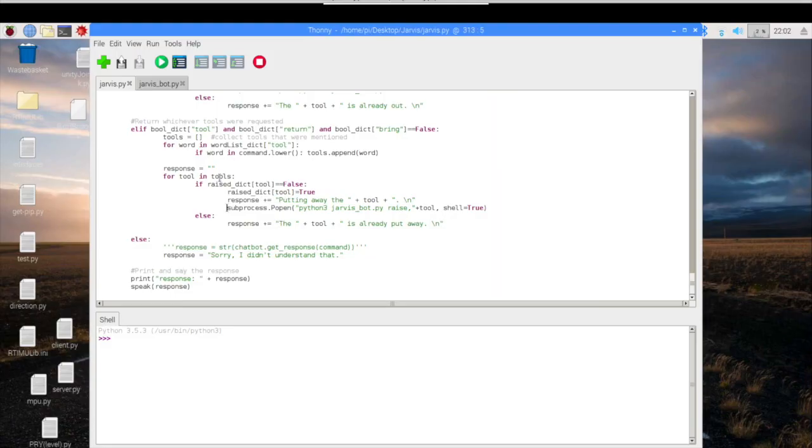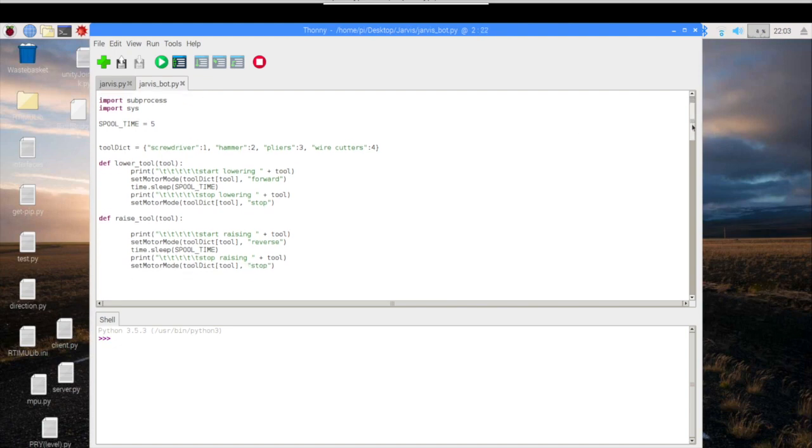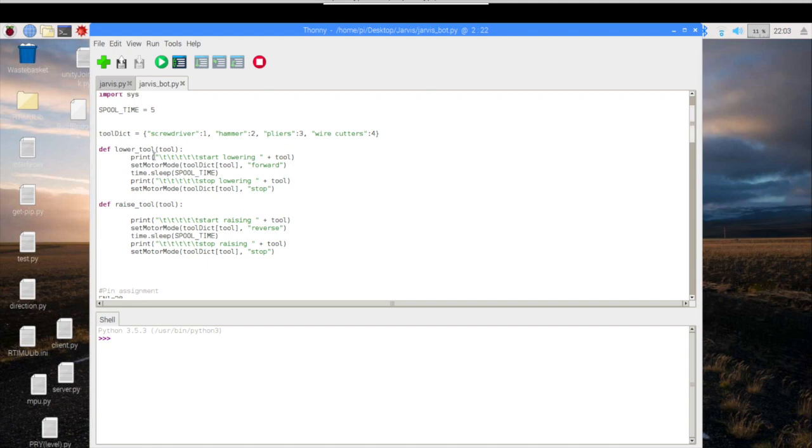Let's look at the code. Before in our code when we recognized that there was a tool and a bring word or a return word, we would just say okay great we're putting the tool away. Now we're going to actually call a subprocess, we're going to run this Jarvis bot program with the word raise if we're going to raise it and then whatever tool it is. Let's look what that is. Jarvis bot is over here and we're going to be using the RPI GPIO so that we can interact with the input output pins.